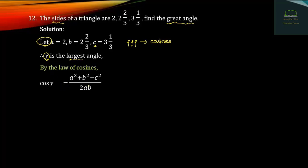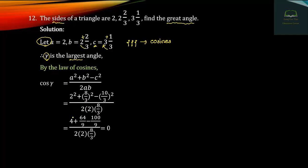A squared plus b squared minus c squared by 2ab. Given a is 2, we got the values. 32 squared, and a boundary, and a 2 squared for a squared 64. Three squared nine, sixty-four, one nine, minus ten squared hundred, three squared nine, by 2 into a boundary. The result gives us a value of zero — cosine of the angle equals zero.